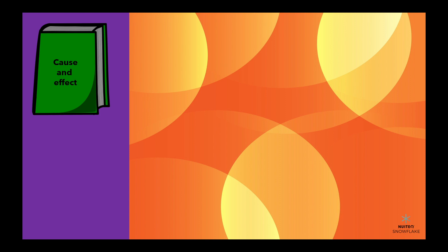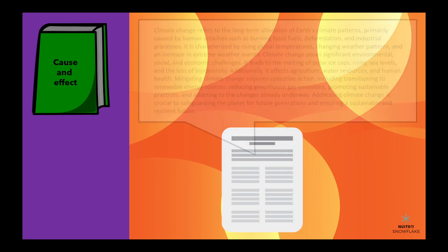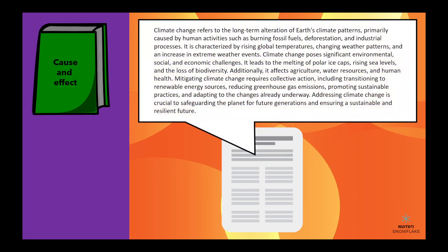For example, when we read about climate change, we learn about the causes, such as human activities and greenhouse gas emissions, and the effects, such as rising temperatures and melting polar ice caps. This helps us understand the impact of our actions on the environment.